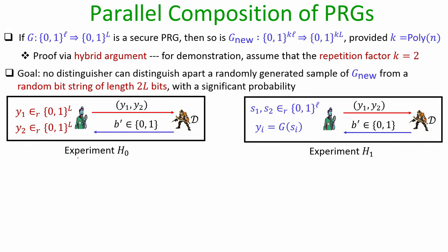In experiment H0, both parts Y1 and Y2 are uniformly random strings of length big L bits - this corresponds to a truly random generator challenge. In experiment H1, both Y1 and Y2 are generated by invoking the existing algorithm G on uniformly random seeds S1 and S2 independently - corresponding to the algorithm G_new generating the challenge.